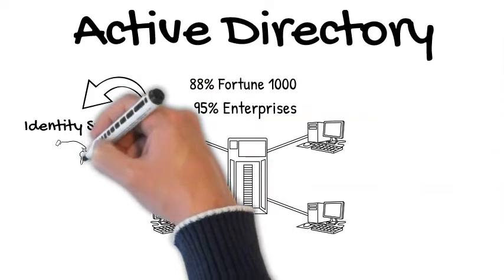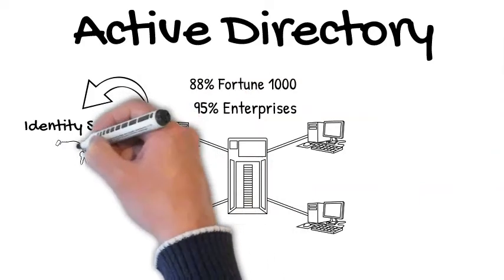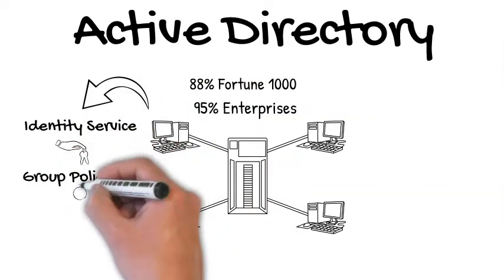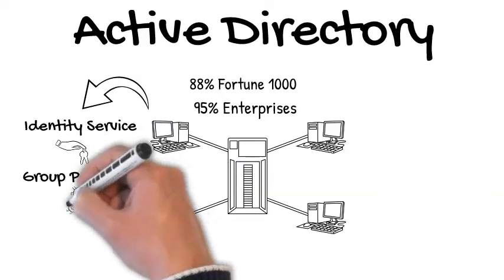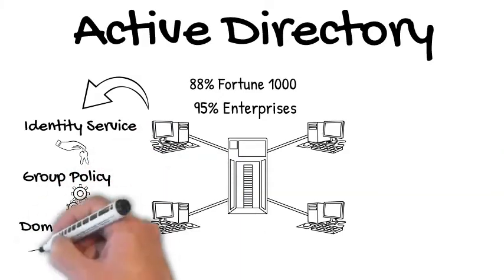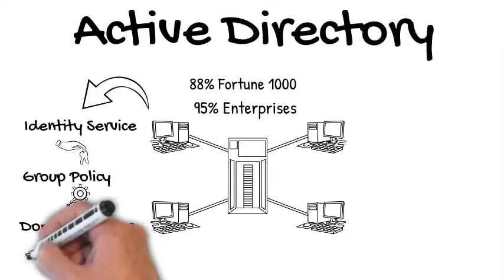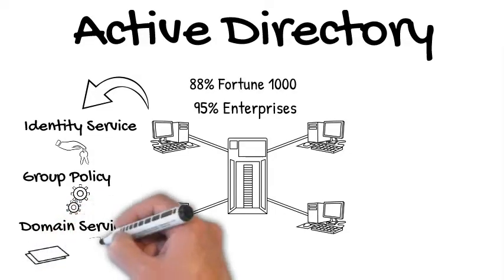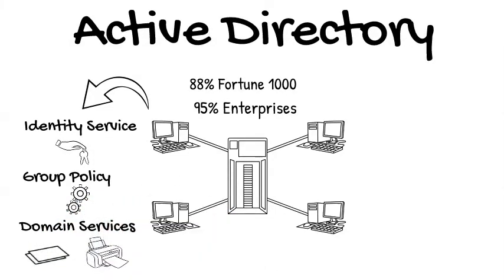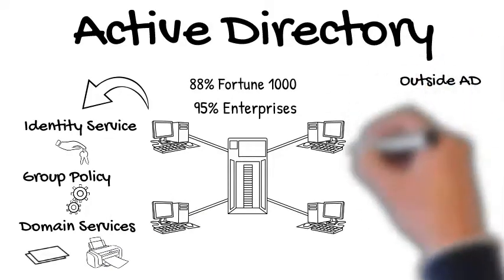Everything from identity services to user accounts, groups, and passwords, to group policy which gives you the ability to configure and secure these devices, to other domain services such as file servers and even print servers. All of these services provide unique capabilities for Active Directory.